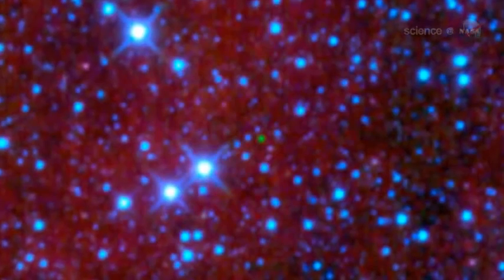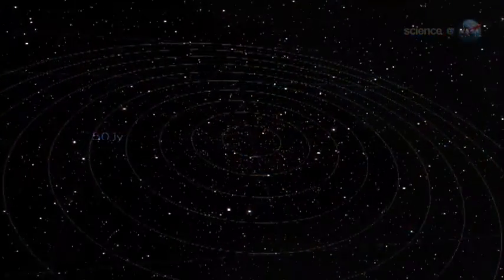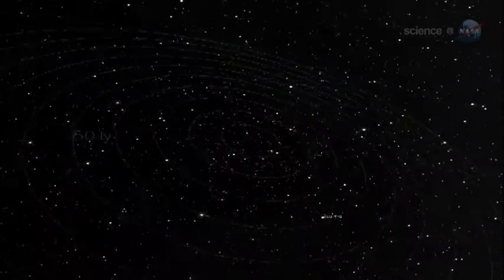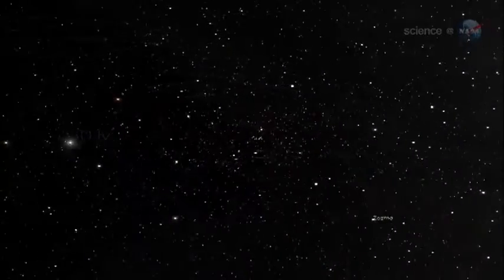Without fusion to keep them going, brown dwarfs cool and fade with time until what little light they do emit is at infrared wavelengths. Perfect targets for a telescope like WISE. WISE scanned the entire sky for these and other objects and was able to spot their feeble light with its highly sensitive infrared vision.